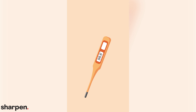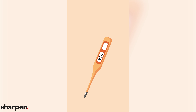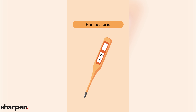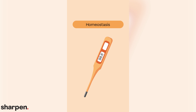Living organisms have the ability to regulate their internal chemical and physical environments to stay in a constant balance known as homeostasis. For example, the human body maintains an internal temperature of around 98.6 degrees, no matter the external temperature.